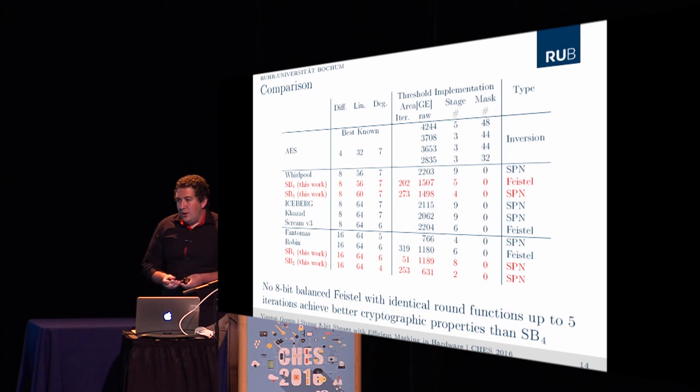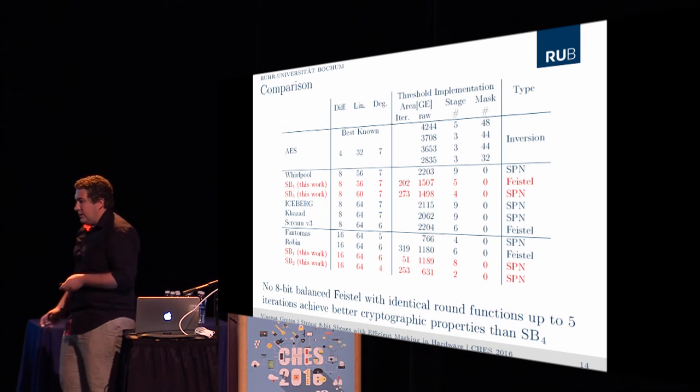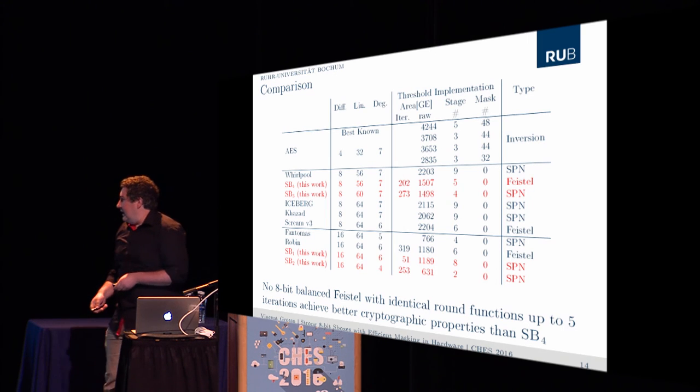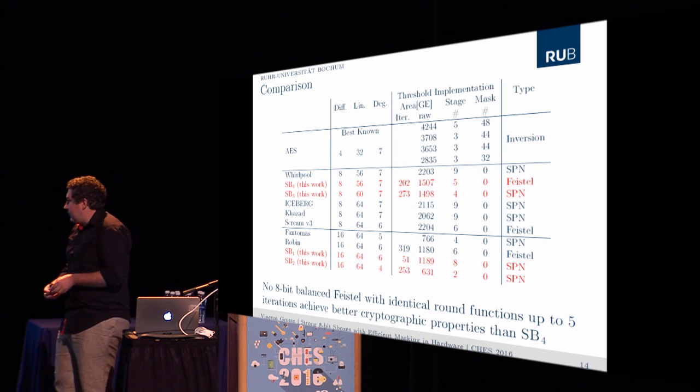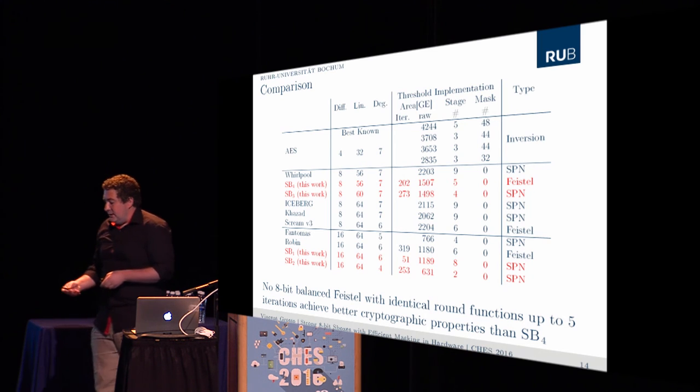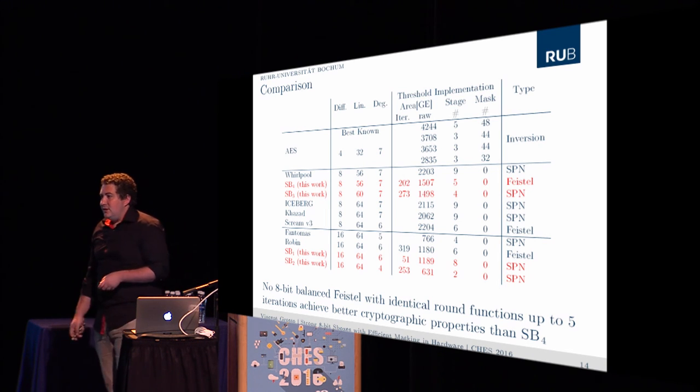Finally, due to our exhaustive search on Feistel network, we have this side result that says there exists no 8-bit width Feistel network with the same round function, and if we iterate up to five rounds we cannot have something better than before. So that is the same as Whirlpool. That is somehow interesting for some people.